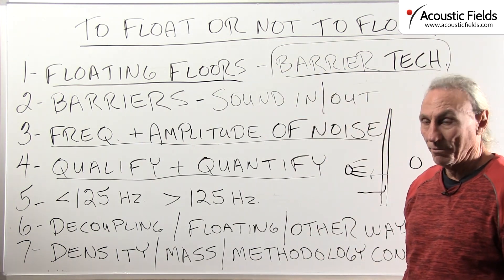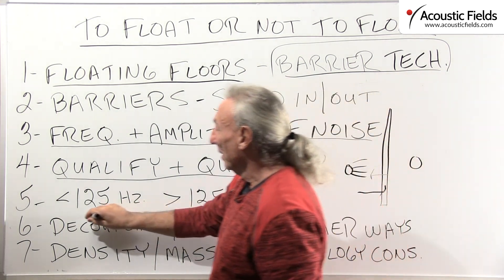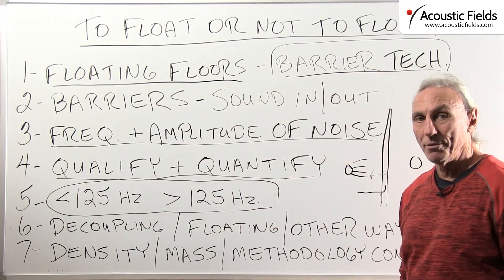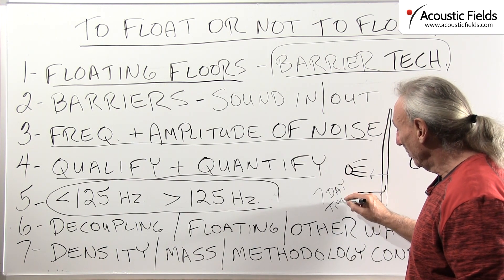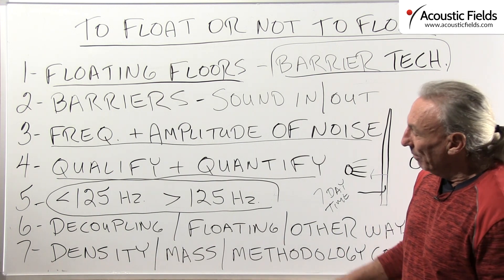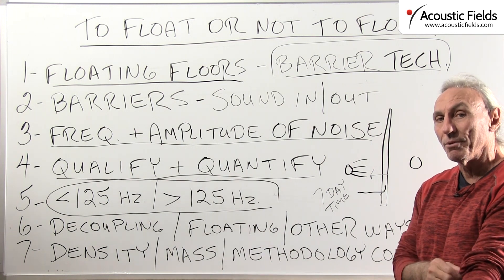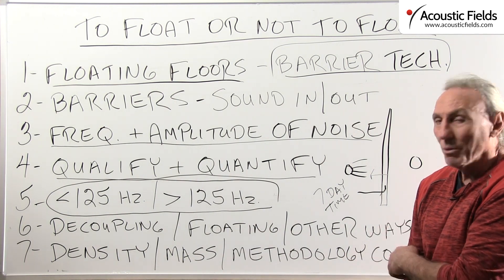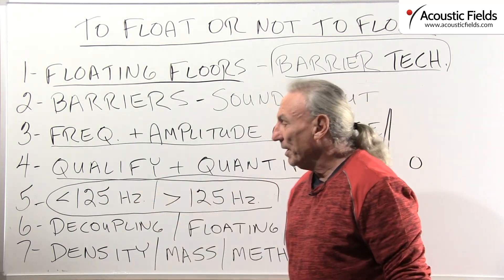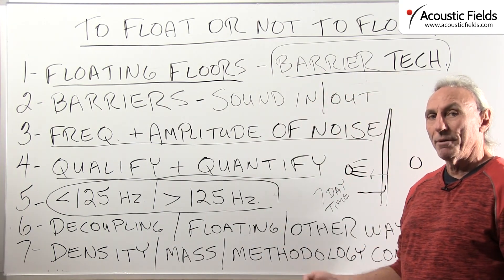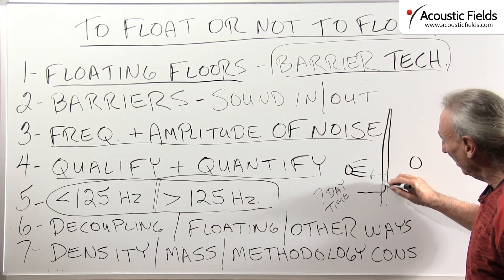One of the ways to build a barrier is a floating floor, but you must qualify and quantify the frequencies you're dealing with, and this can only be done through measurements. We do what's called a seven-day noise time study. What are we looking for? We're looking at two ends of a spectrum: energy below 125 Hz and energy above 125 Hz, because this is the frequency break point for how thick the wall needs to be.